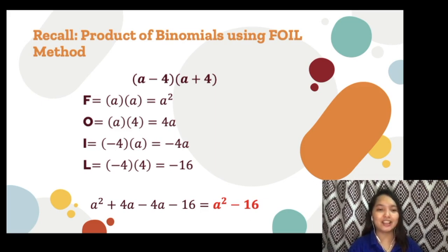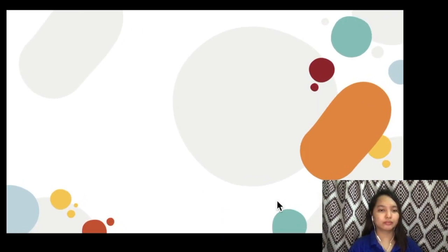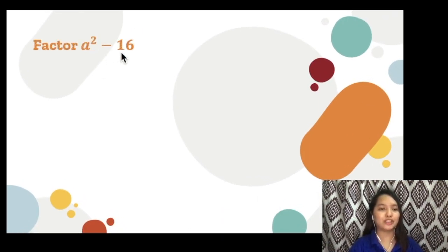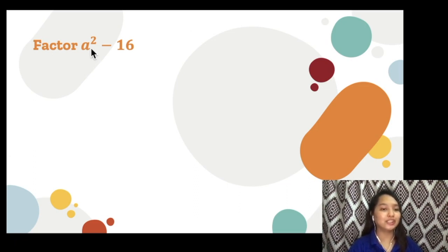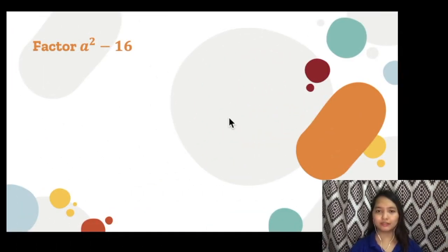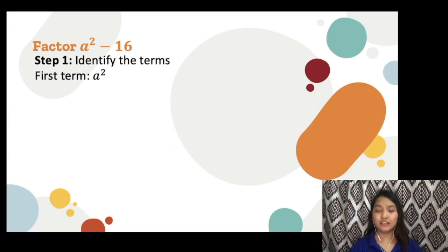We will reverse the process. This time, you will be given the difference of two squares and you have to find the binomial factors. Let's start with a squared minus 16. First, let us check if the given is really a difference of two squares. Is a squared a perfect square? Yes — notice the exponent is divisible by 2. Is 16 a perfect square number? Yes. Step 1: Identify the terms. The first term is a squared, while the last term is 16.